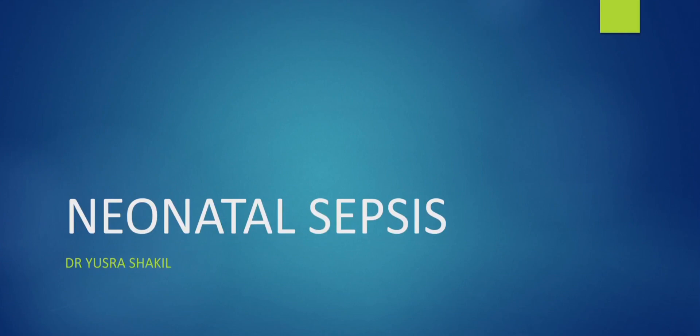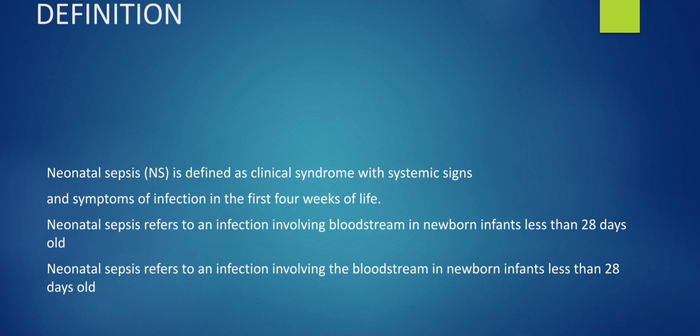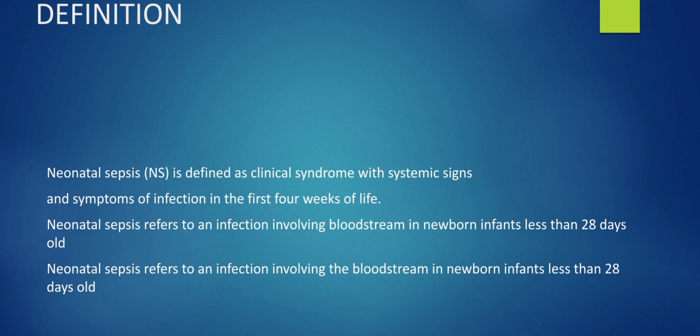Today we'll be talking about neonatal sepsis, which is defined as a clinical syndrome with systemic signs and symptoms of infection in the first four weeks of life — that is, the first 28 days. Neonatal sepsis refers specifically to an infection involving the bloodstream in newborn infants less than 28 days old.